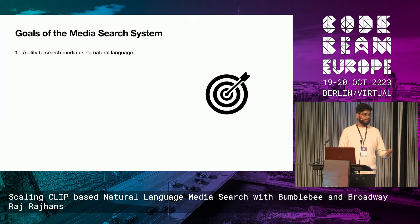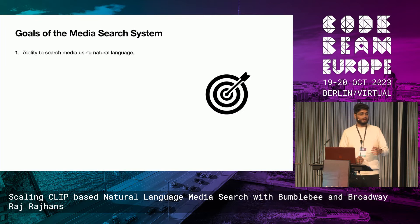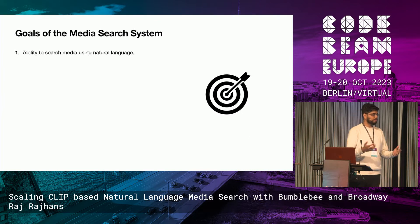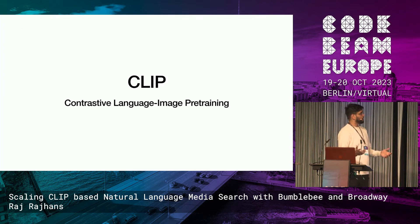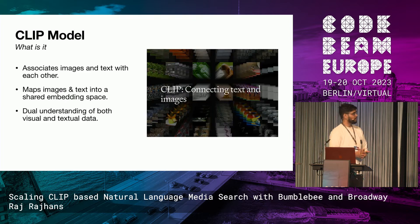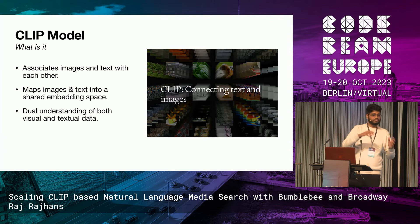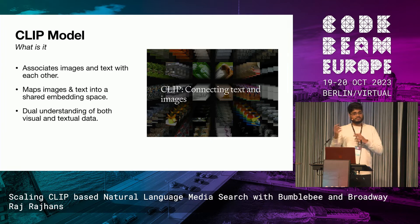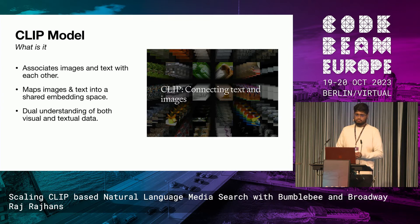The first goal we had in mind while building this was the ability to search media using natural language. We were looking into how this is possible, what existing solutions are, and we stumbled onto an open source model released by OpenAI called CLIP, which stands for Contrastive Language Image Pre-Training. This model is really good at associating images and text with each other — it corresponds to the way a human mind would associate images and text. The way it does that is by mapping images and text into a shared embedding space.